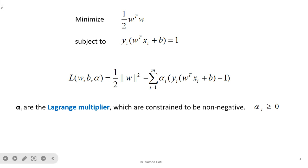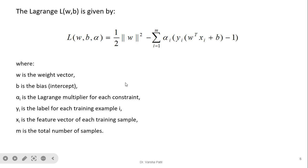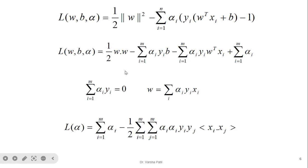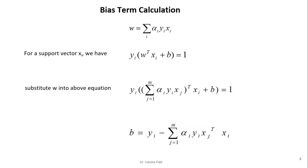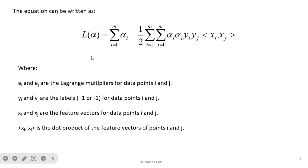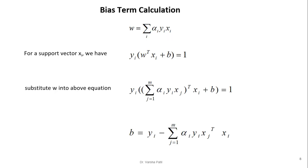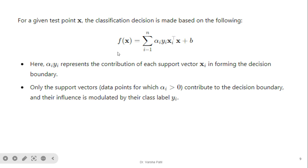We take the partial derivative with respect to w and with respect to b, and substitute those values back into the equation. After taking the derivative with respect to b and w, we arrive at the final dual equation. I have already explained the derivation of this equation in my previous video. Once we find this equation, we can proceed to calculate the bias term and classify any new unseen sample.